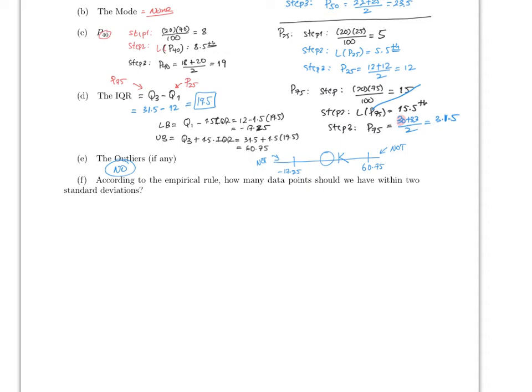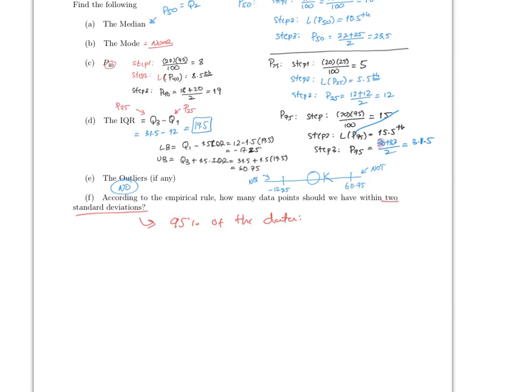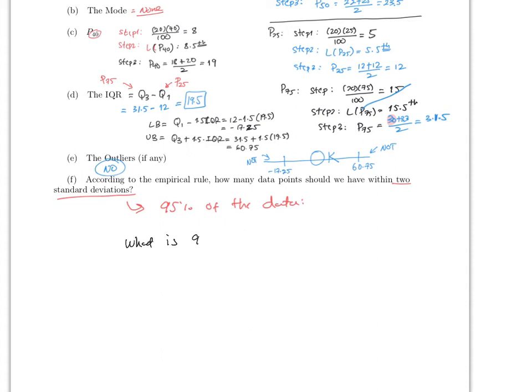You should never have more than two or three outliers. The empirical rule says if you move two standard deviations in each direction, you should have 95% of the data. With n = 20, we calculate 0.95 times 20, which is 19 data points.